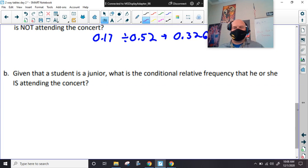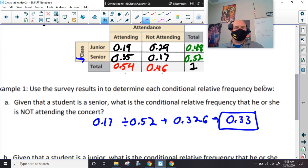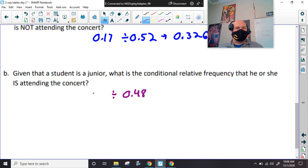All right. Given that a student is a junior, so we got to look at our junior. So, we know we're going to divide by 0.48 here. And what is the conditional relative frequency here? She is attending the concert. So, we just look at the attending. So, that's 0.19. Divide by 0.48. And we get like 0.395. So, we're going to round this up.